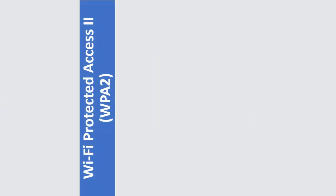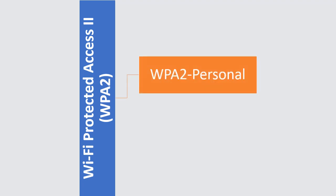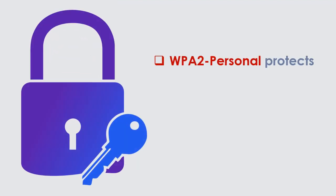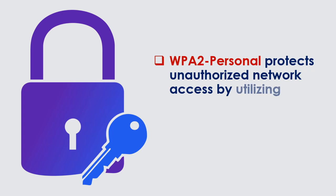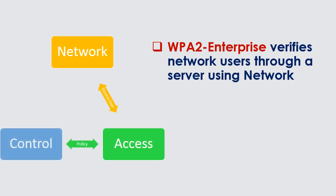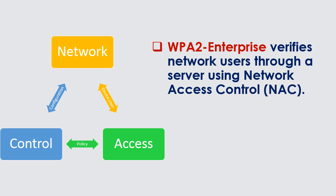Wi-Fi Protected Access 2, WPA2, has two versions: WPA2 Personal and WPA2 Enterprise. WPA2 Personal protects unauthorized network access by utilizing a setup password. WPA2 Enterprise verifies network users through a server using Network Access Control, NAC.